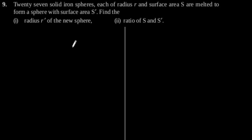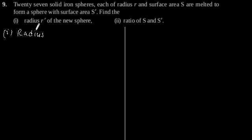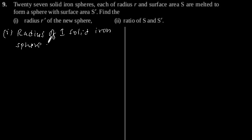Exercise 13.8, question number 9. 27 solid iron spheres, each of radius r and surface area s, are melted to form a sphere with surface area s dash. Find the first part: radius r dash of the new sphere. So solving for the first part, given is radius of one solid iron sphere is r.